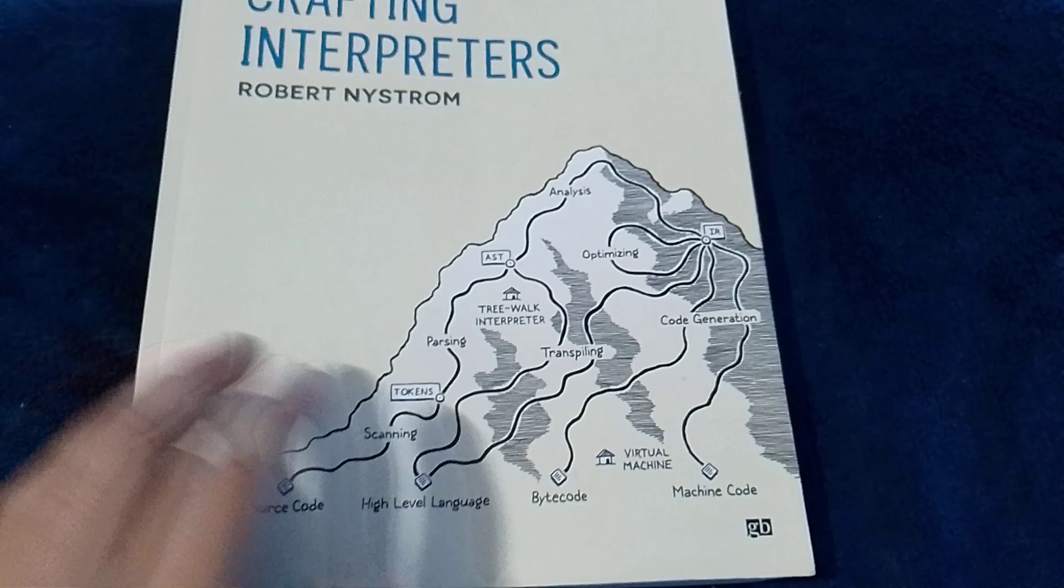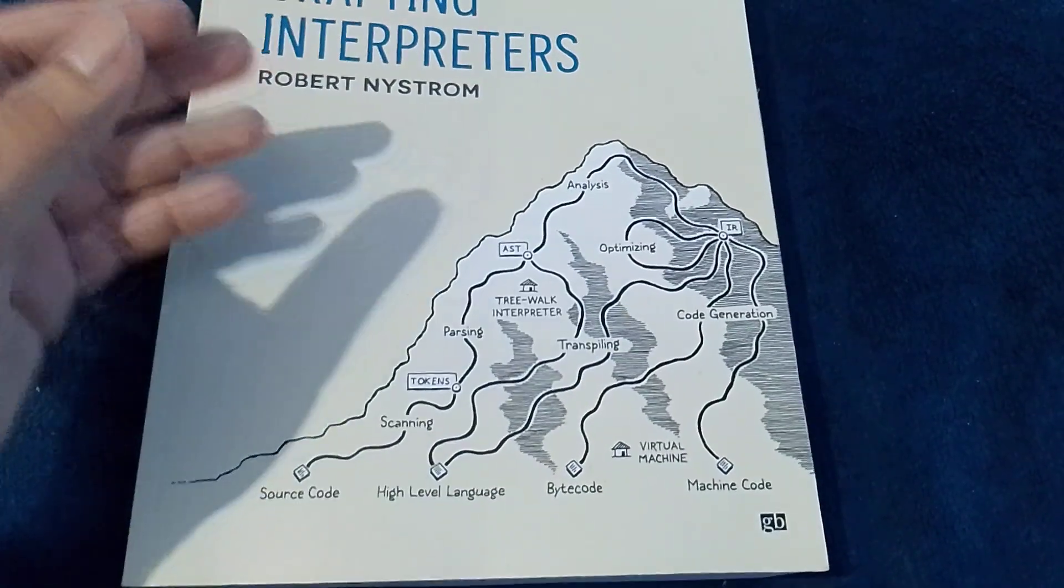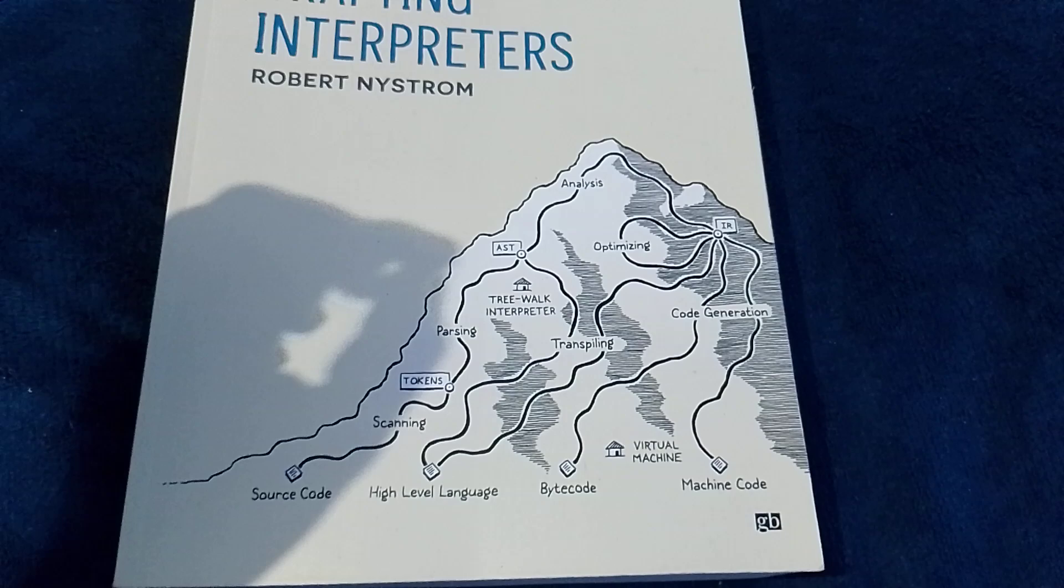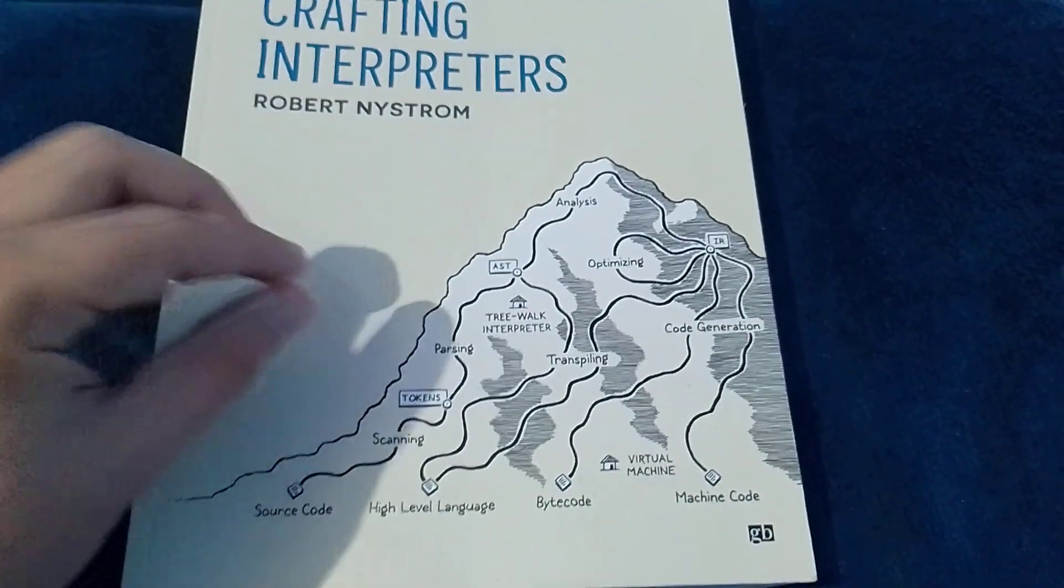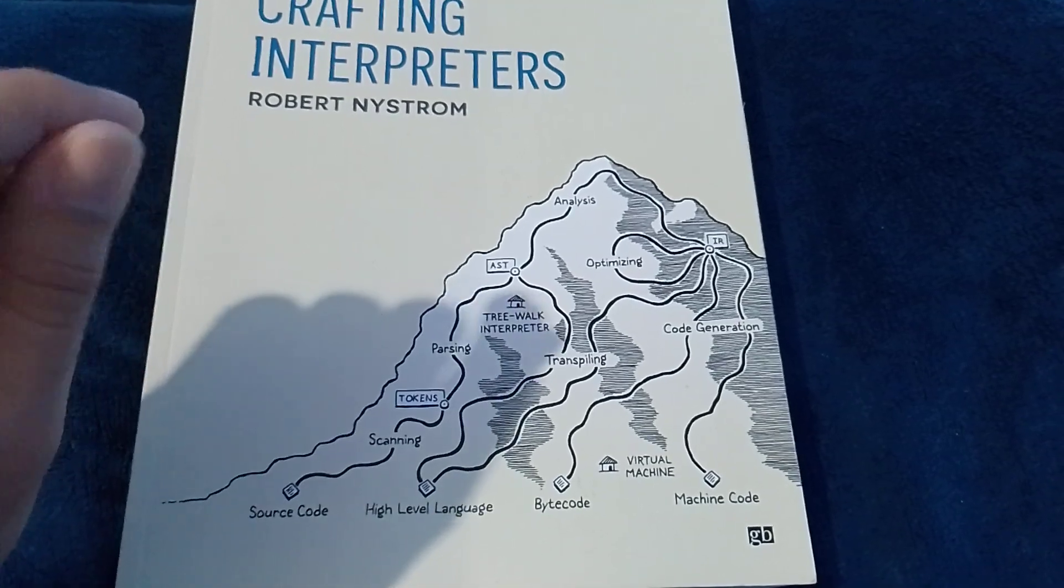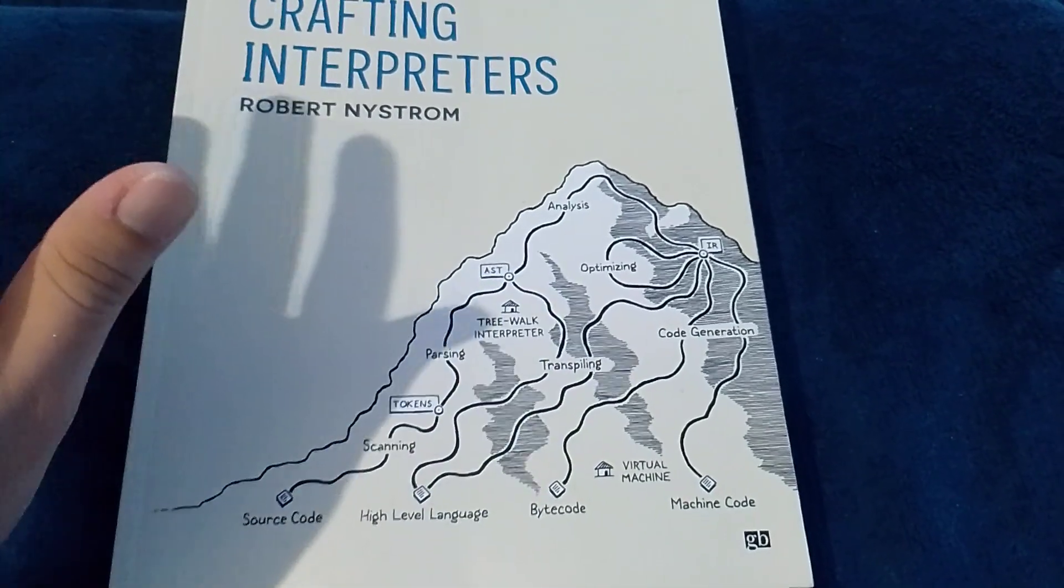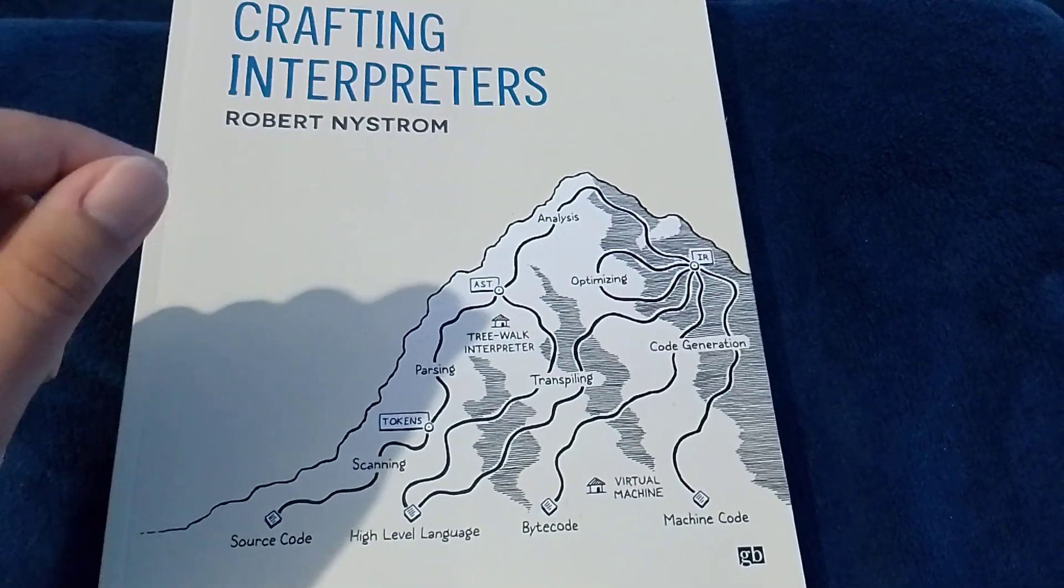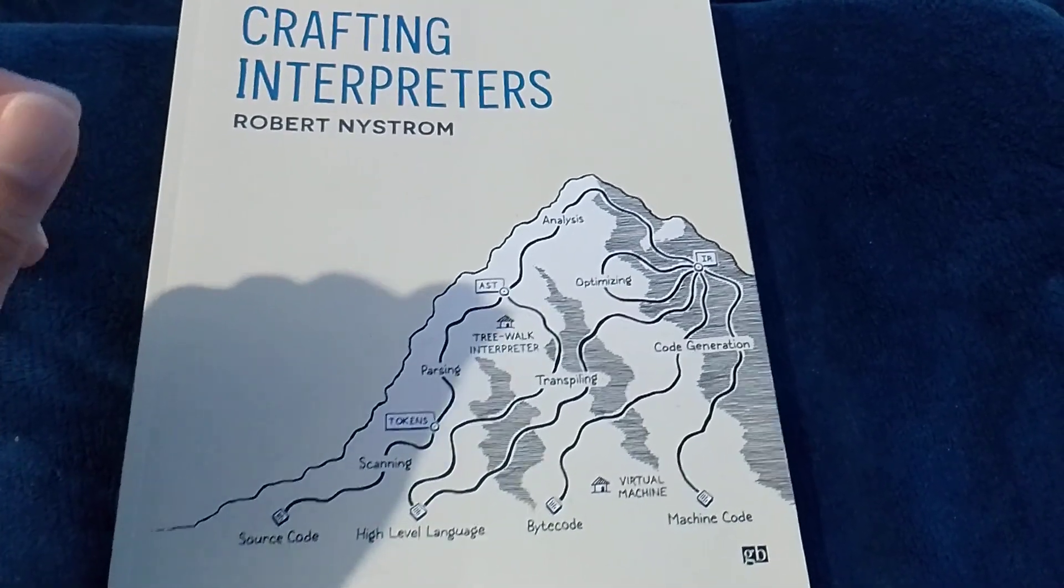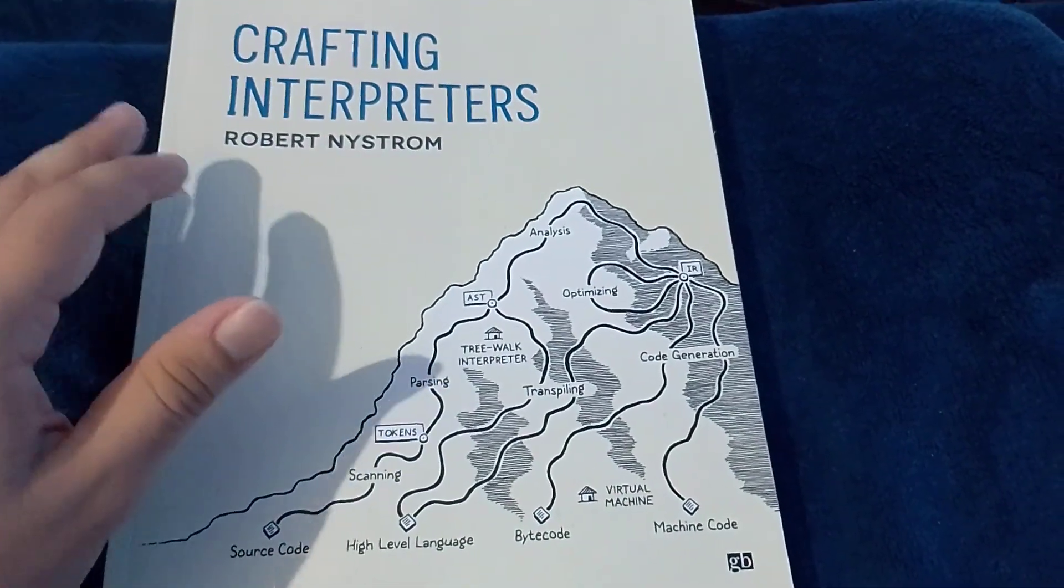So, we are going to create an interpreter from the ground up. So, every piece of code that interpreter needs is going to be covered in this book. He is not going to hide any detail. Everything is going to be covered in details. And we are going to explore how interpreters are made.